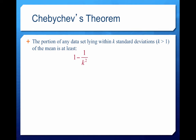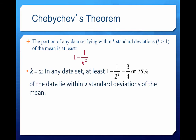Lastly, let's talk about Chebyshev's theorem. The portion of any data set lying within k standard deviations — where k must be greater than 1 — of the mean is at least 1 minus 1 over k squared. We can use Chebyshev's theorem when we don't have bell-shaped distributions. For example, this is for any distribution. If k equals 2, in any data set, at least 1 minus 1 over 2 squared, or 4, gives us 75% of the data lying within two standard deviations of the mean.